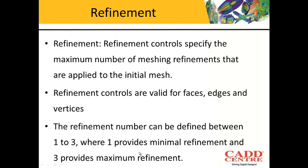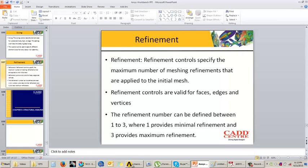What is the meaning of refinement? Once you get the meshing, if you still want to refine the meshing to the next level, you can use the refinement option. This refinement option is only valid for faces, edges, and vertices — it cannot be applied on solid geometries or solid bodies. The refinement control is between 1 to 3. Now let us understand how to use both these options.